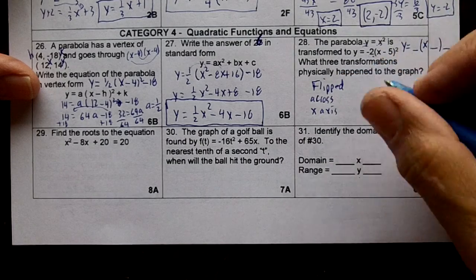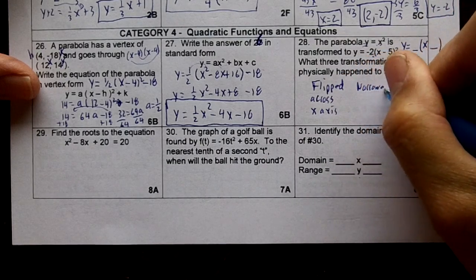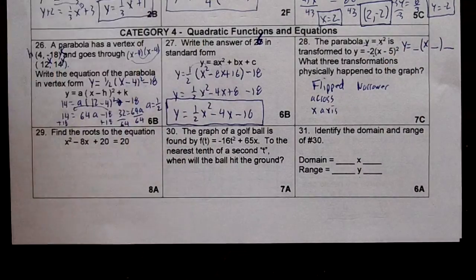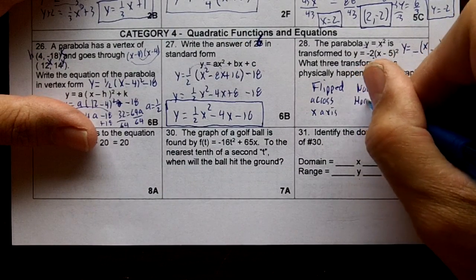The 2 makes it narrower, which also means if you make it narrower, you squish it horizontally or it's horizontally compressed.